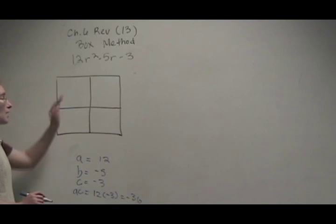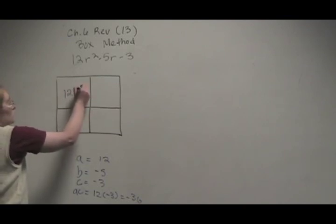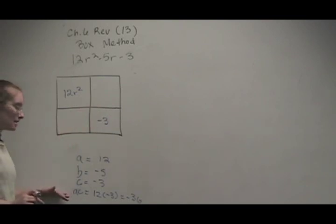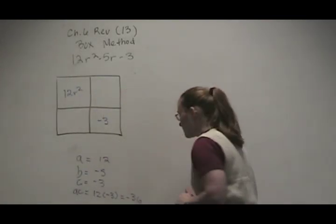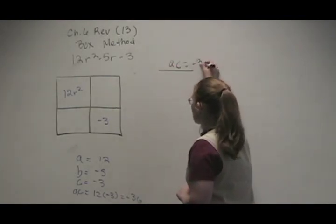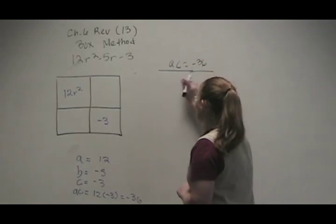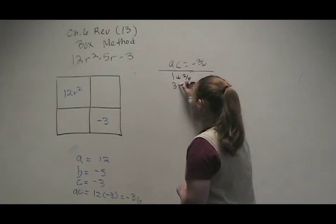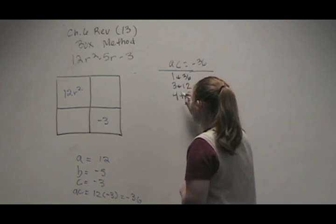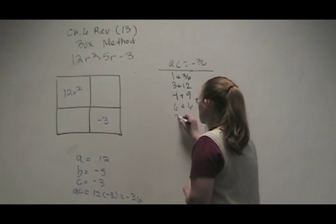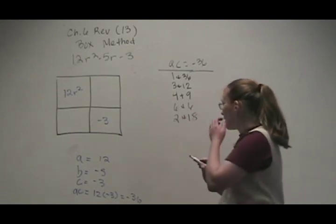Now, the first thing we can write in here is we know we want the first term and we want the last. But to get these two, we have to use this AC term. So what I'm going to do is I'm going to write out all the factors of this AC. So 36 can be 1 and 36, it can be 3 and 12. Let's see, 4 and 9, 6 and 6, 2 and 18. I think I have them all.